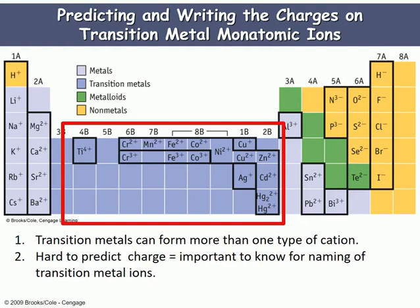If you look at group 1A, they like to form plus 1 charges. Group 2A, plus 2 charges all the time. You'll never see a magnesium plus 1 or a magnesium plus 3 — it's always magnesium plus 2. Sodium, potassium, lithium, these guys are all going to be plus 1. Then coming over to the other side of the periodic table you'll see some trends for groups 5A, 6A, and 7A. Non-metals like to make anions — they like to gain electrons. All these metals like to lose electrons.